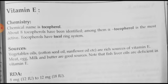The sources of Vitamin E are vegetable oils like cottonseed oil and sunflower oil, which are the rich sources of Vitamin E, along with meat, egg, milk and butter as good sources. Fish liver oil contains less Vitamin E. The RDA recommended dietary allowance of Vitamin E for an adult person is 8 mg, that is 12 international units per day, up to 12 mg or 18 international units, depending upon the requirement.